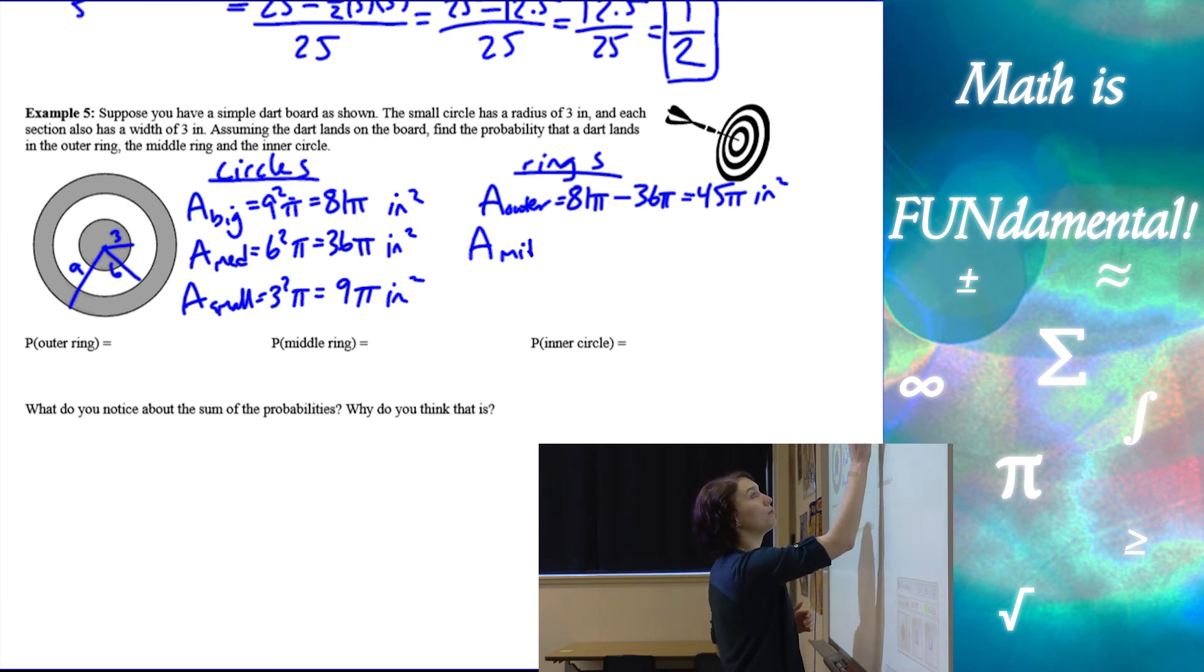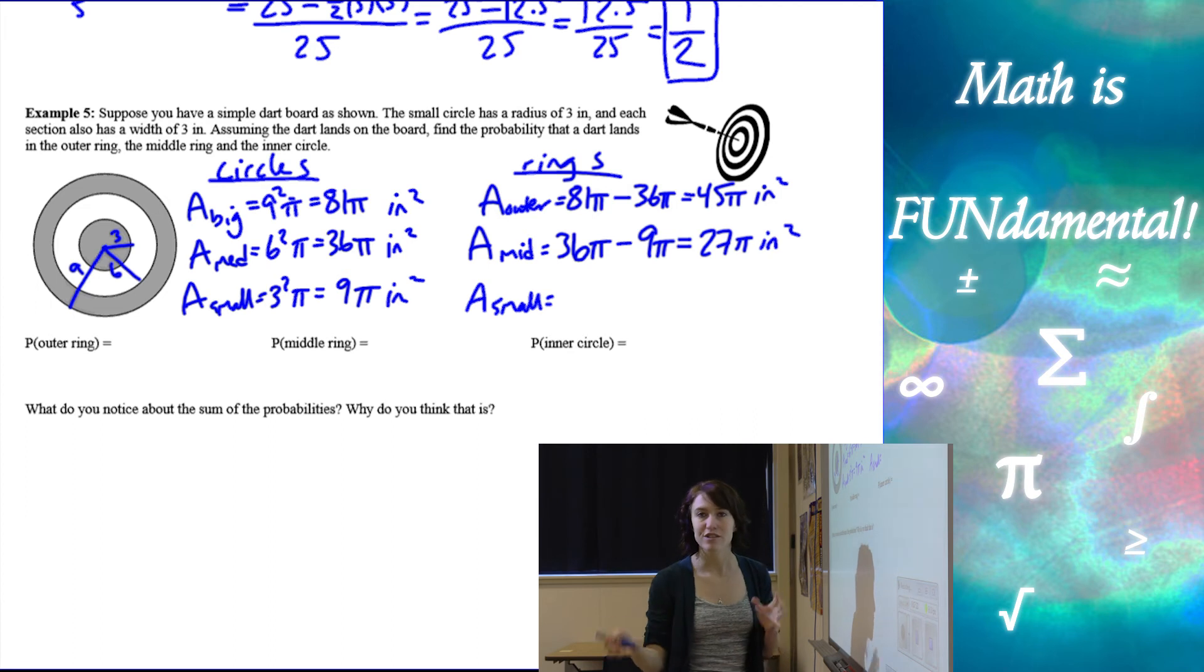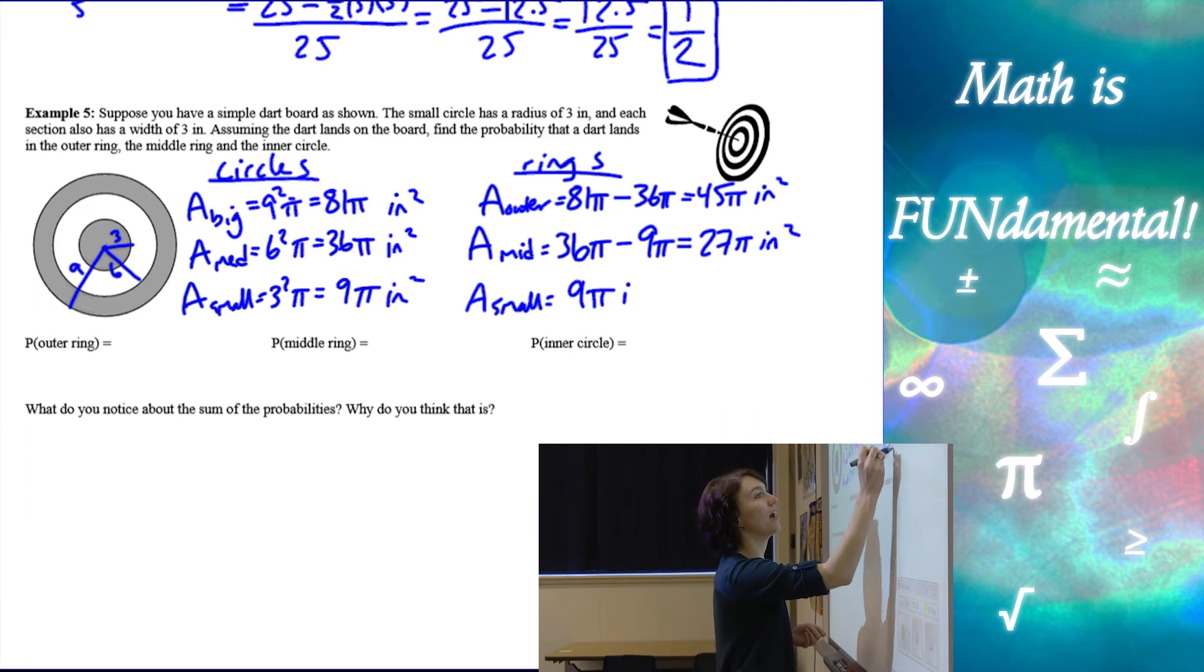Now area of the middle ring is going to be the medium circle, which is 36 pi minus the inner circle, which is 9 pi. So now we have 27 pi inches squared. And then the area of our small is actually the same circle as the one we've already calculated. So that's 9 pi inches squared.